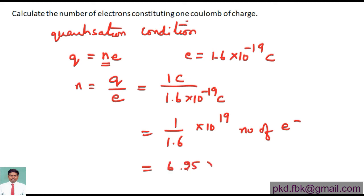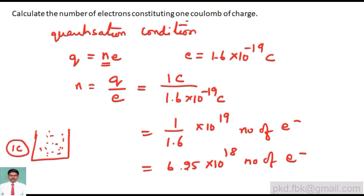Imagine a bag containing 6.25 × 10^18 electrons. If this many electrons are present inside the bag, then the bag represents 1 coulomb of charge. One coulomb is a very big unit.